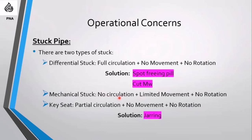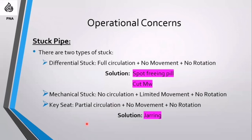For mechanical sticking: no circulation, no rotation, and no or very limited movement — sometimes what seems like movement is just pipe stretch, not actual movement. Because there is no circulation, you activate the jar — up and down — to free the string. If that fails, you go to a mechanical back-off or fish the string. A key seat (KC) type of stuck pipe also exists — it can appear as partial circulation, sometimes confused with differential, but it comes from hole geometry.